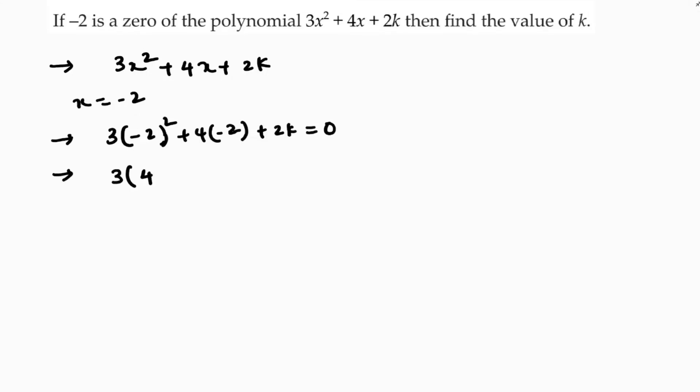Minus 2 whole square is 4, 3 times 4 is 12, plus 4 times minus 2 is minus 8, plus 2k equals 0. 12 minus 8 plus 2k equals 0.